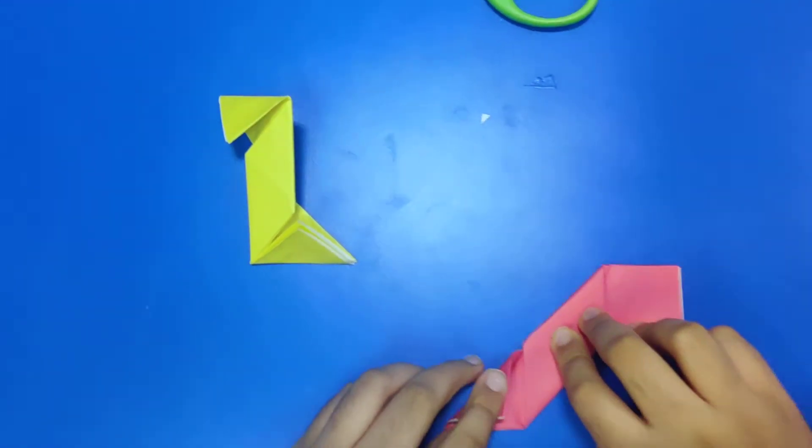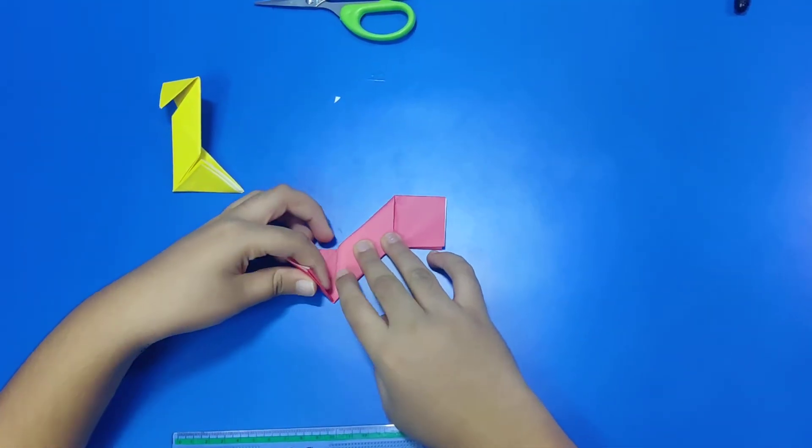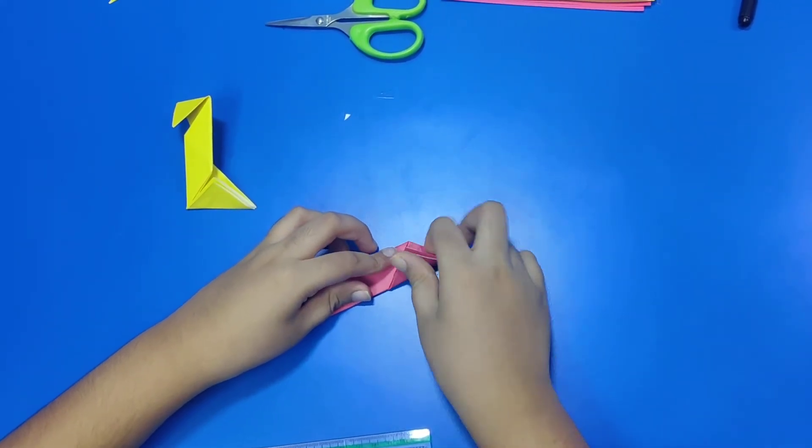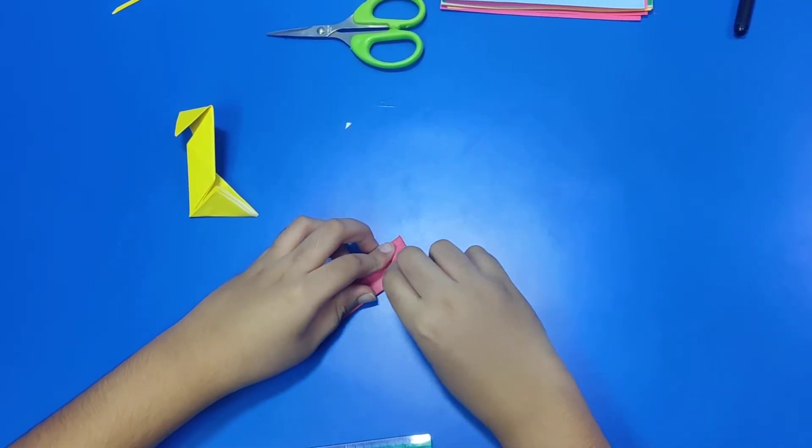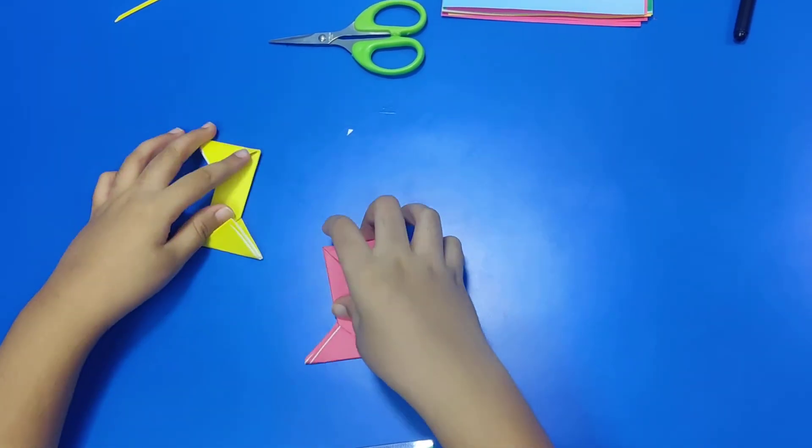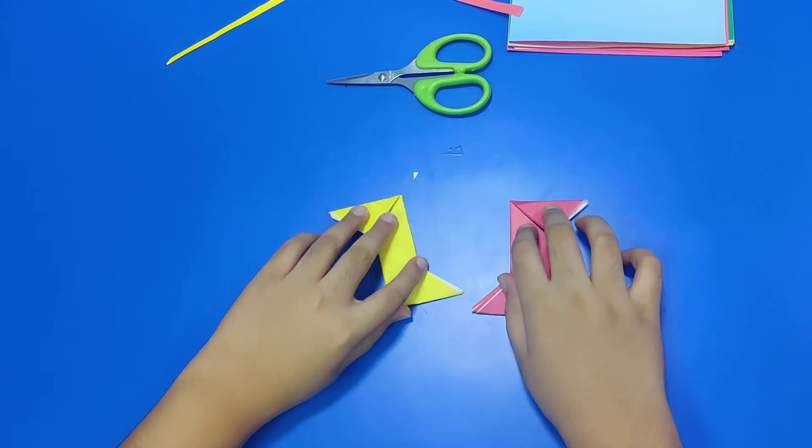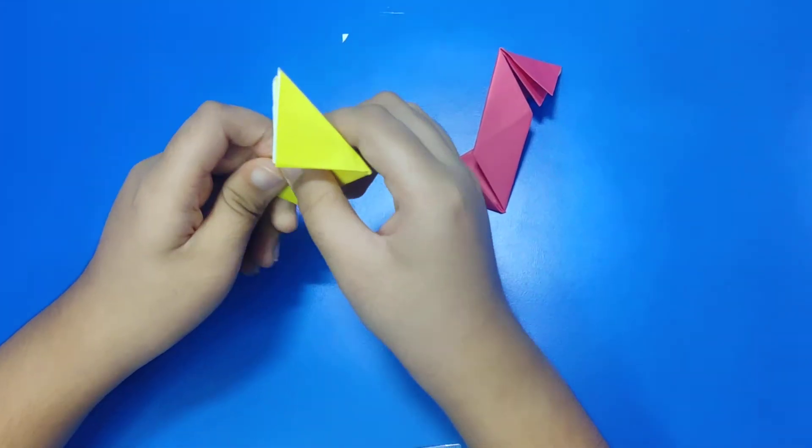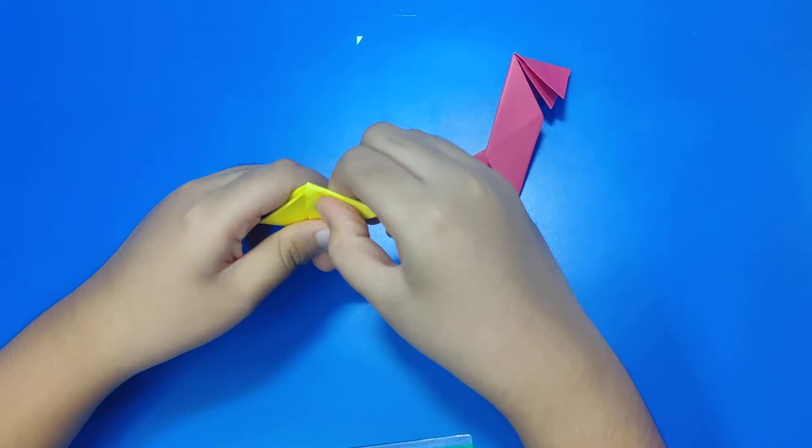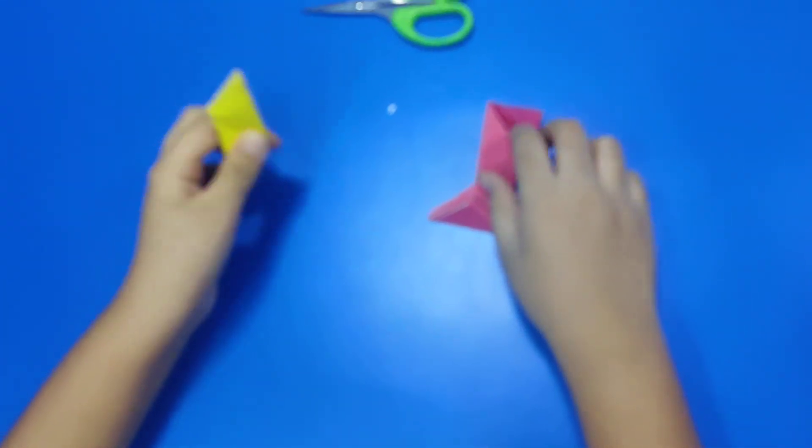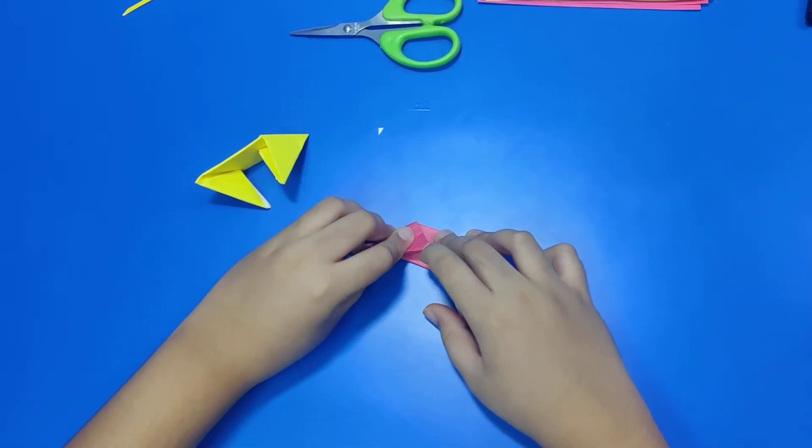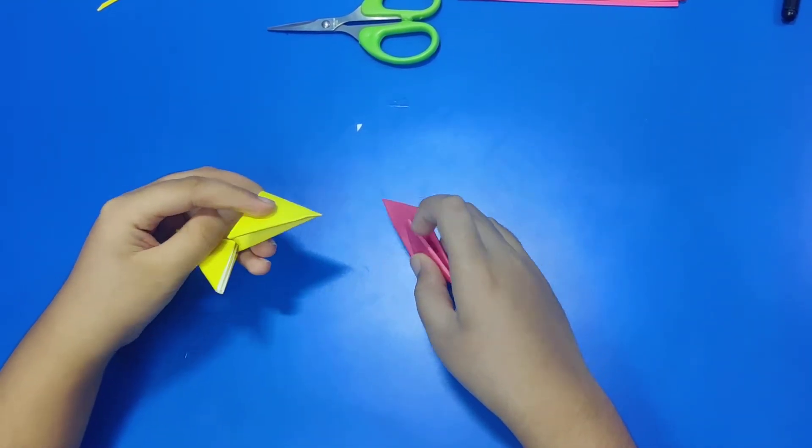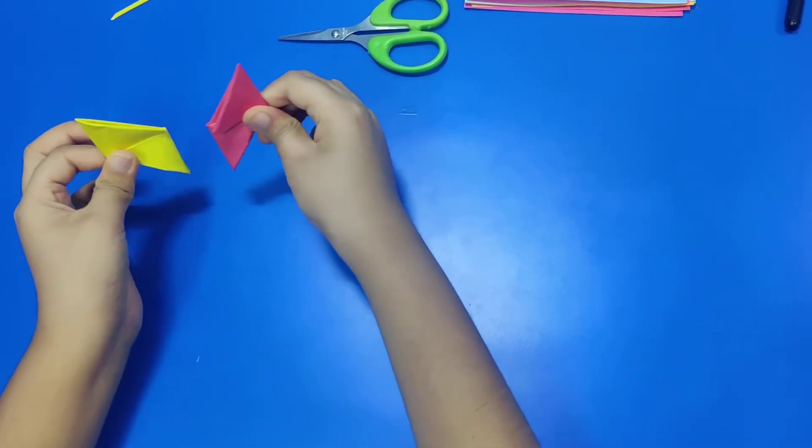Now, do the same with this. It should look like this. Now, fold it like this. Same over here. Like this. Now, same here. It should look like this.